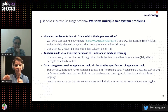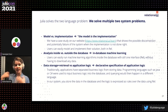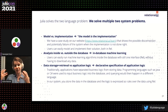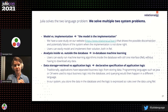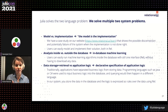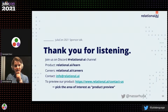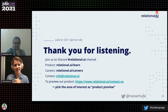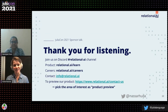Just as Julia solves the two-language problem, our system solves multiple two-system problems. First: model versus implementation — when you write REL code, that is already your model. Second: analysis inside the database — traditionally you'd download data from a database, run machine learning externally, then compute results; for us, running machine learning is as simple as running a query. Third: data storage and retrieval versus application logic — traditionally separated, but for us application logic can be written in REL. Come talk to us on the Relational AI Discord channel — we're always recruiting and we love Julia!